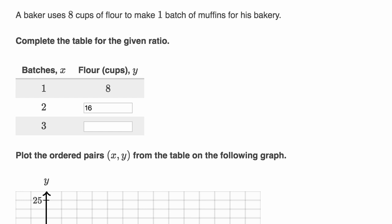And if he had three times the number of batches, it would be three times the number of cups of flour. So instead of 8, it would be 8 times 3, or 24.